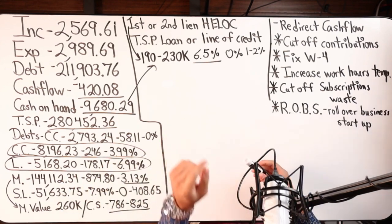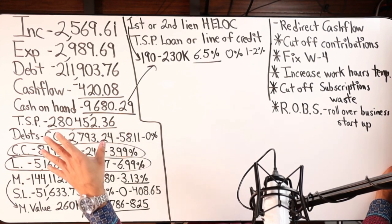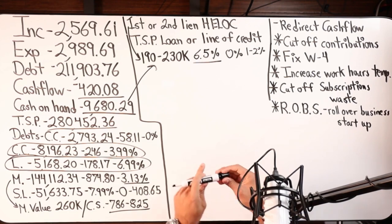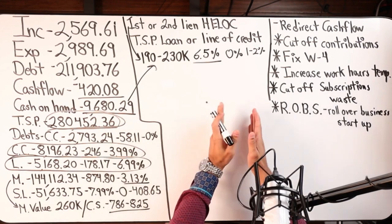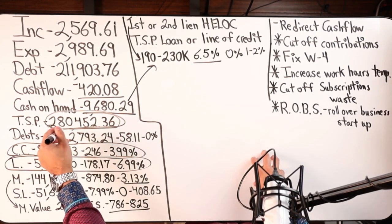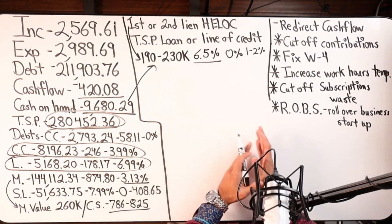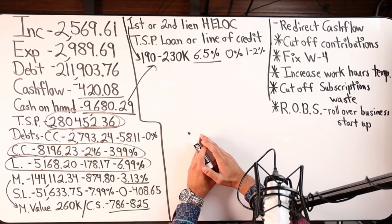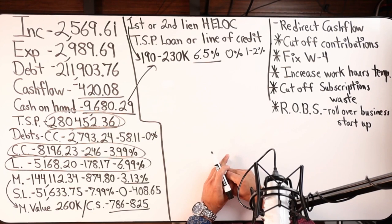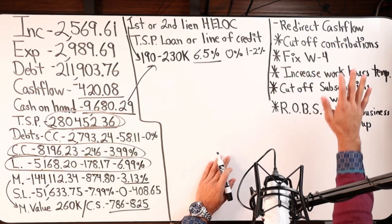If they don't go the first lien HELOC route, they could potentially get what's called a securities-backed line of credit or asset-backed line of credit — sometimes called a margin account. They would take a portion of this asset and put it in a margin account, accessing forty to fifty percent of the asset's value. With secured assets, rates are typically two to four percent or lower. That could be used to eliminate the two remaining debts, move cash into the line, and get back to positive cash flow through debt restructuring, consolidation, and velocity banking.